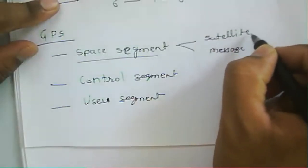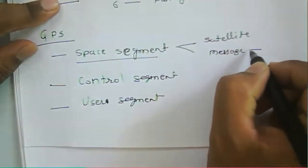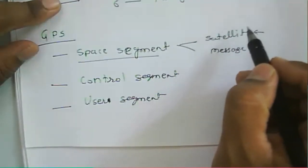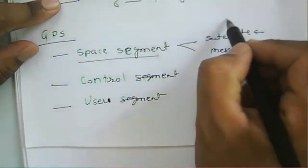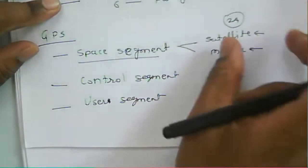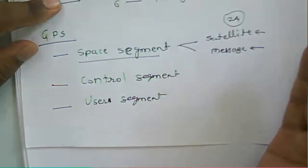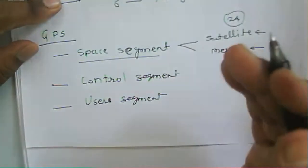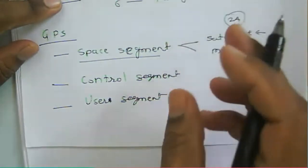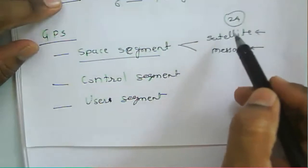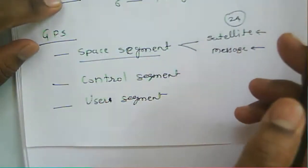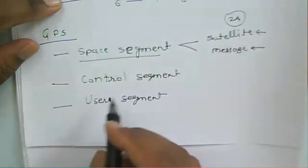We have seen the space segment — how we transmit the message, what is the message format, and what various satellites are used in the constellation. There will be 24 satellites for sending the message; other satellites remain in orbit and are present in that particular orbit.